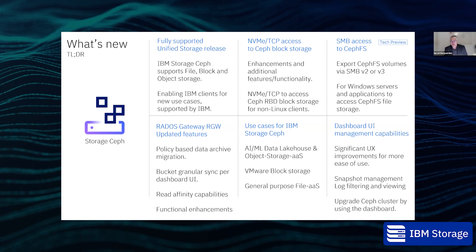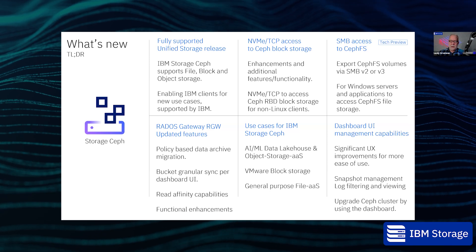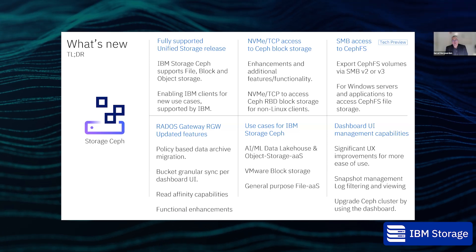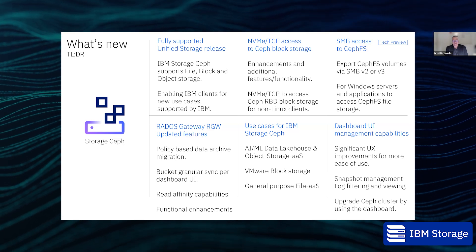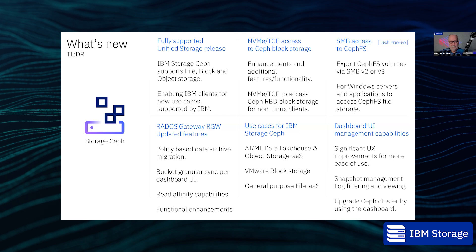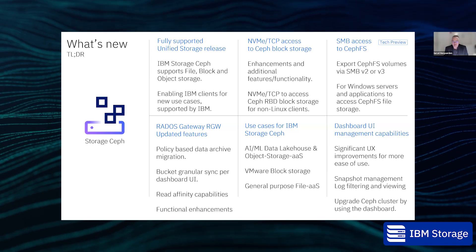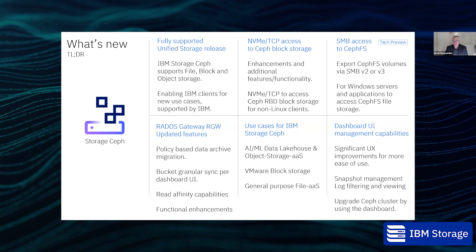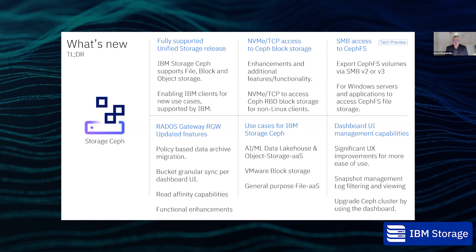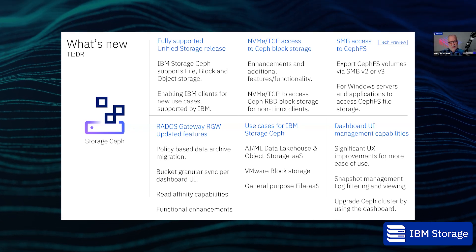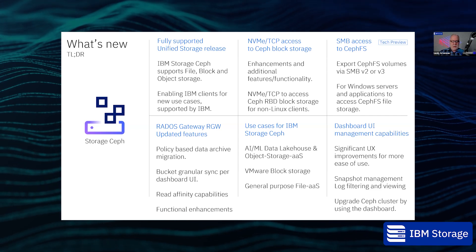The SMB feature will come to GA in the next minor release of IBM Storage Ceph, expected around Q2 of next year. It's a new opportunity for clients to make more use of IBM Storage Ceph beyond object and block. We already have very robust NFS support, and this gives us broader access to Windows file shares as well.